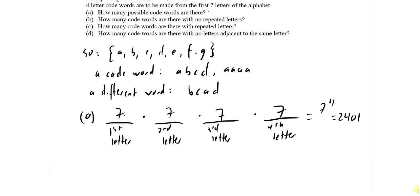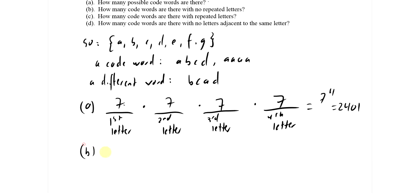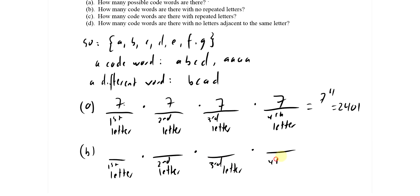How many four-letter code words have no repeated letters? You choose the first letter (7 choices), then the second (can't repeat, so 6 choices), then the third (5 choices), then the fourth (4 choices). So 7 × 6 × 5 × 4 = 840 code words with no repeated letters.